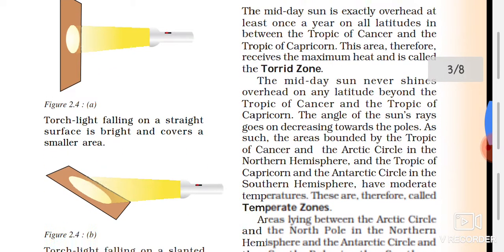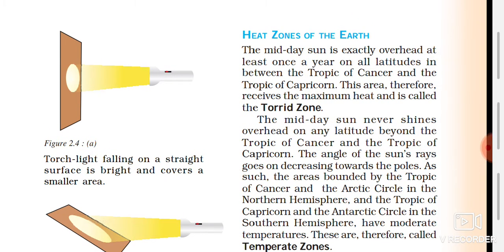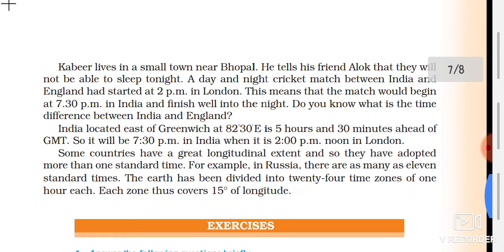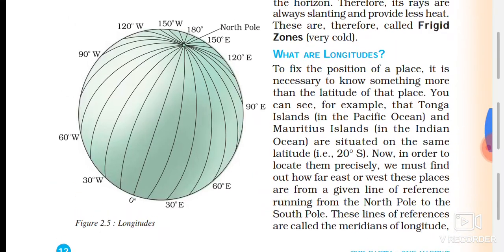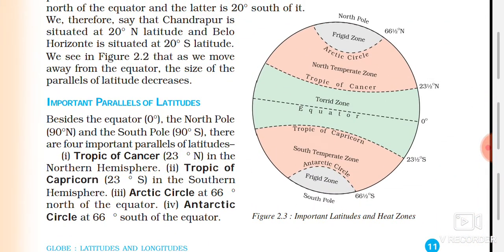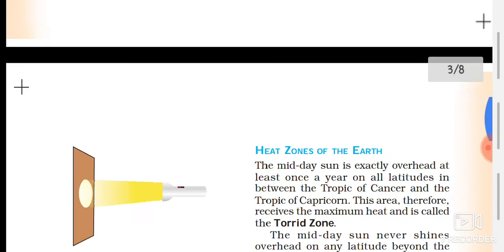The midday sun is exactly overhead at least once a year on all latitudes in between the Tropic of Cancer and the Tropic of Capricorn. This entire area receives the maximum heat, so it is called the torrid zone.